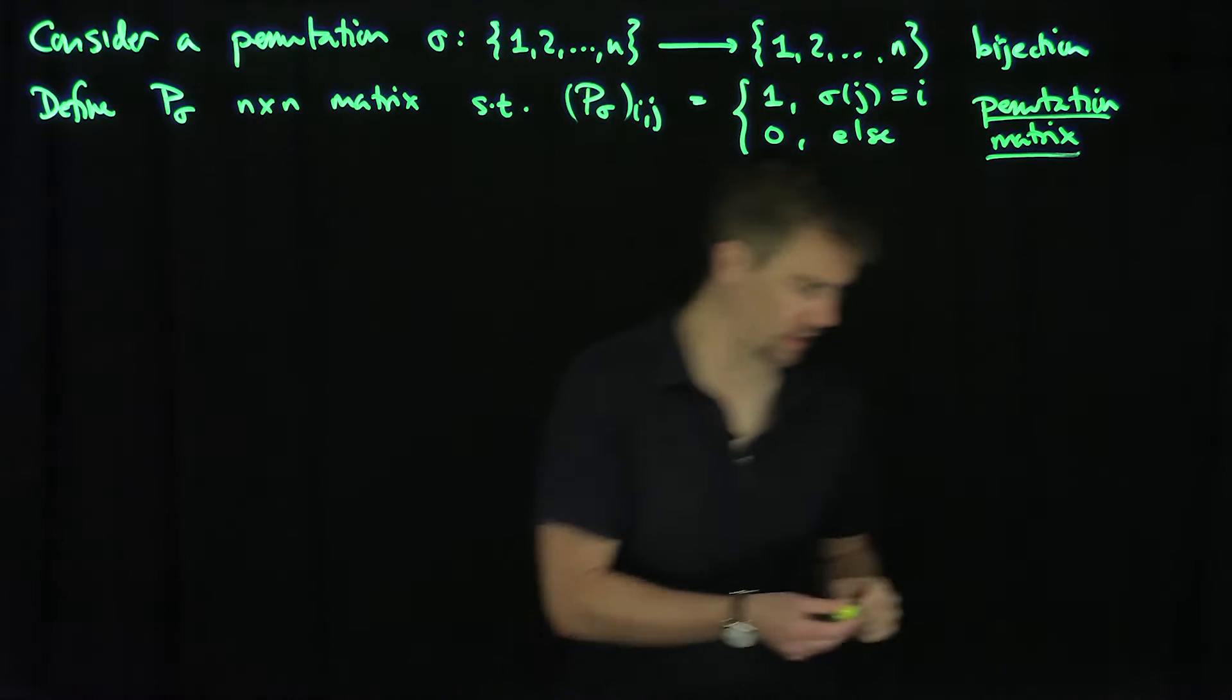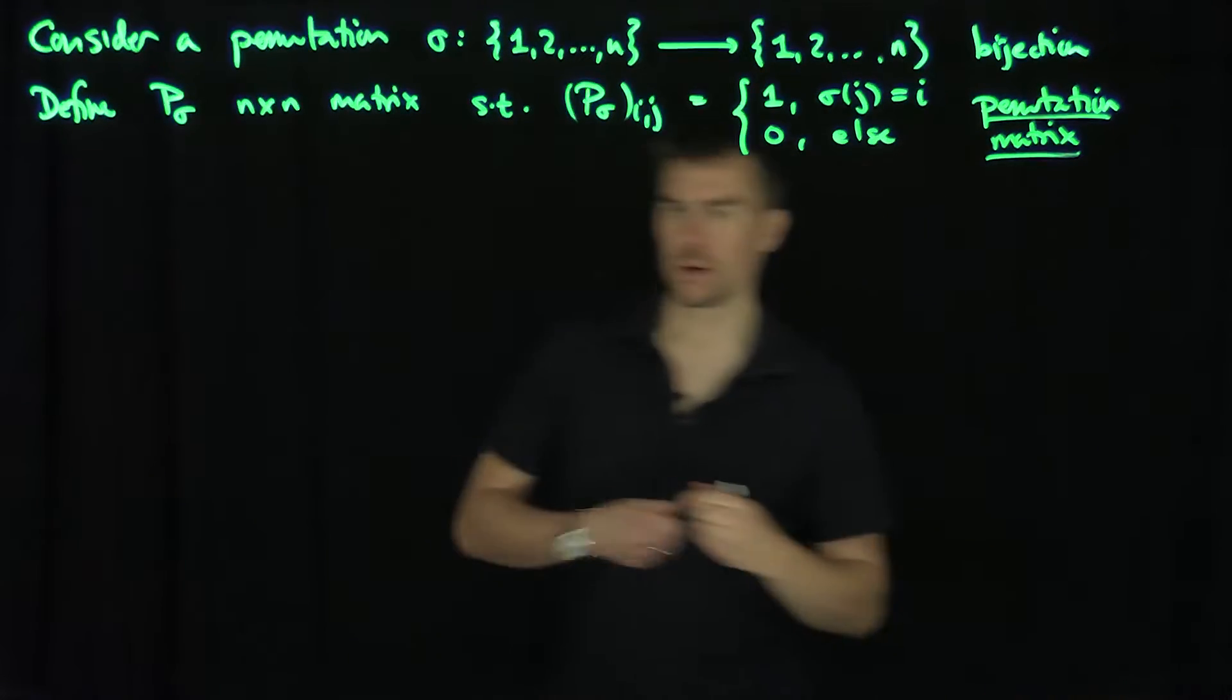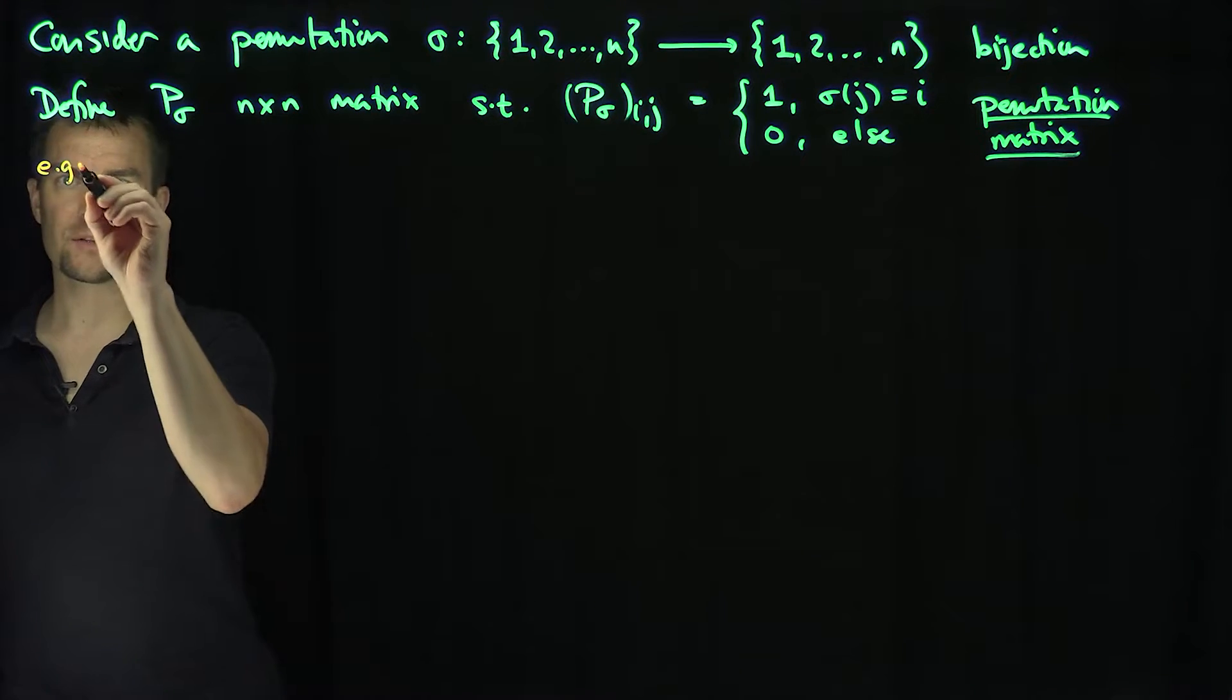We'll see an example of this just to make sure we understand what's going to happen. So let's suppose we're given a permutation, here's an example of one of these things.